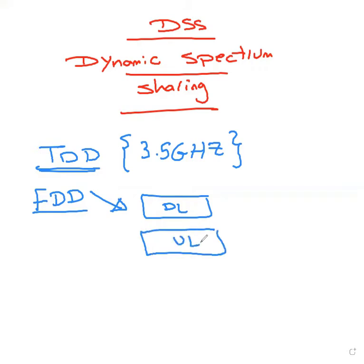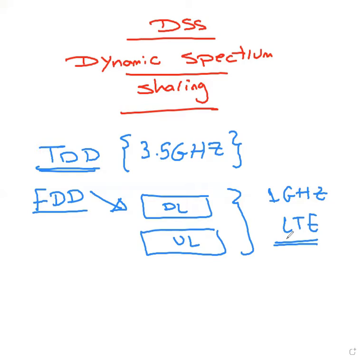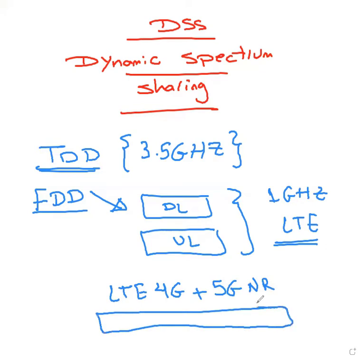All the target frequency bands are already in use by LTE. For example, below 1 GHz, all of these frequency bands are targeted by LTE. By adding spectrum sharing capabilities to the 5G New Radio standards, this spectrum can be accessed while in use, enabling coexistence between 4G LTE and 5G New Radio — so we can use LTE 4G plus 5G NR on the same spectrum.